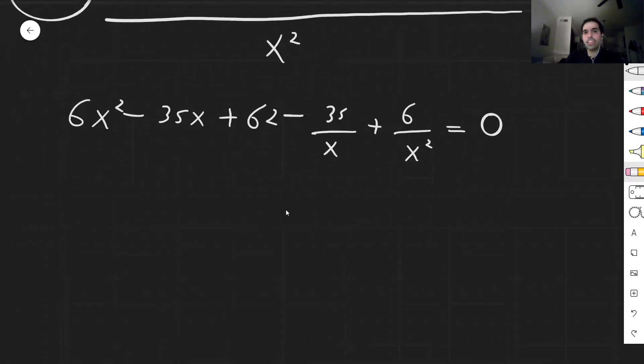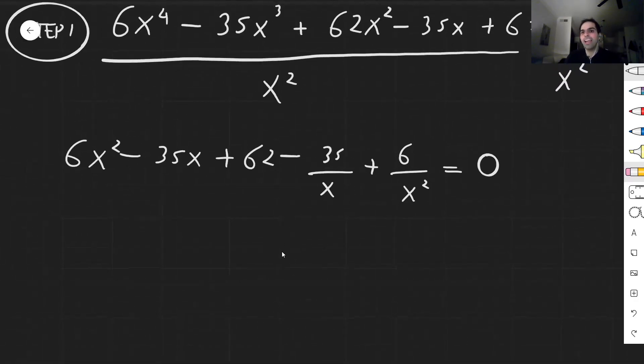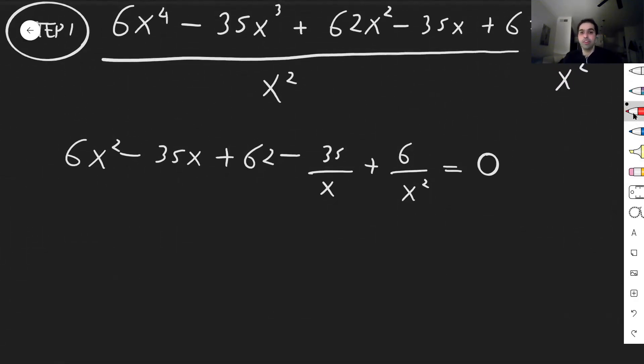And then what you would like to do, you would like to combine terms that are similar. In particular, this 6x squared goes together with the 6 over x squared, and the minus 35x goes together with minus 35 over x.